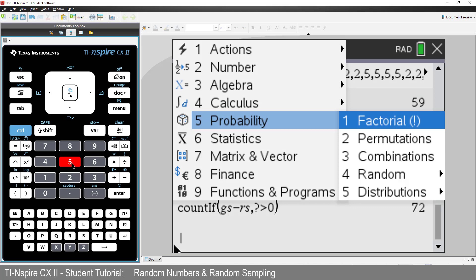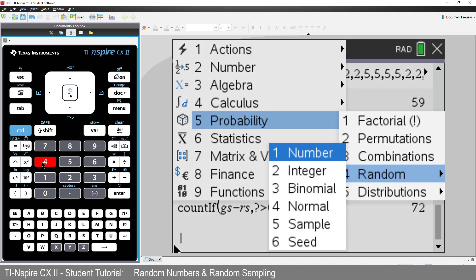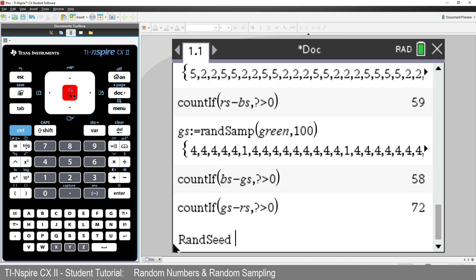The last item in our random menu is seed. It turns out that random numbers are actually really hard for computers to create. The seed command provides an option for a little human intervention. I'll select random seed and enter a number: one, two, three, four.